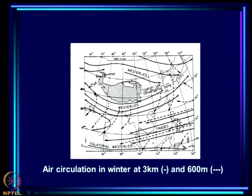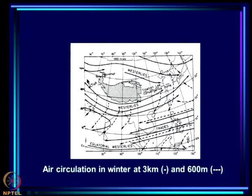In winter the subtropical jet stream comes over us, and that is why Delhi is part of the mid-latitude weather regime in winter. We have the subtropical jet stream coming over us - this is the air circulation at 3 kilometers, and even at 3 kilometers you see very strong westerly winds. This is the Tibetan plateau. The westerly jet, the mid-latitude westerlies which penetrate over the Indian region, actually split - part of it goes north of the Tibetan plateau and part of it comes south.